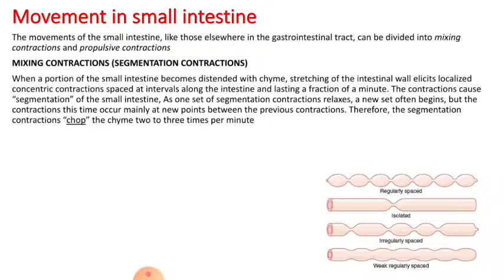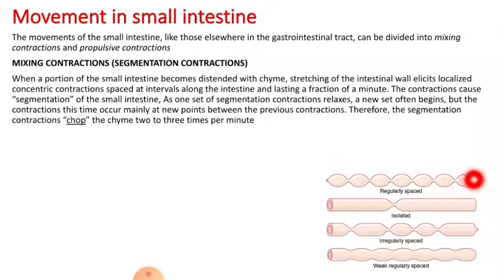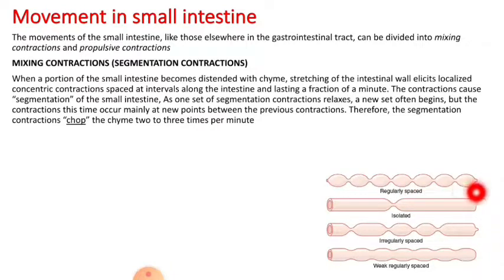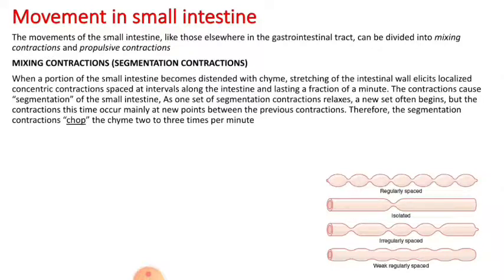The localized stretching causes concentric contractions in specific areas, with relaxed intervals between them. The contracted and relaxed areas then alternate — the previously contracted parts relax, and the previously relaxed parts contract. Over a period of time, the intestine takes on the appearance of a series of sausage shapes. This segmentation chops the chyme into small parts, mixing it thoroughly. The other type of movement is propulsive — the normal peristaltic wave.